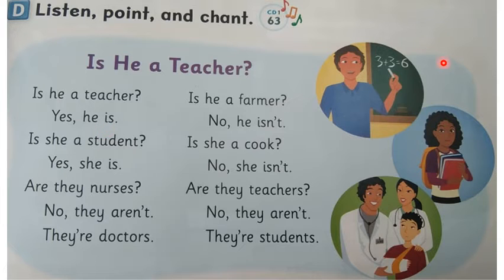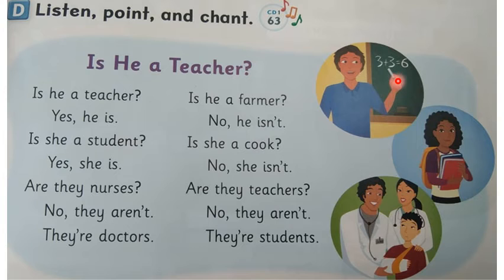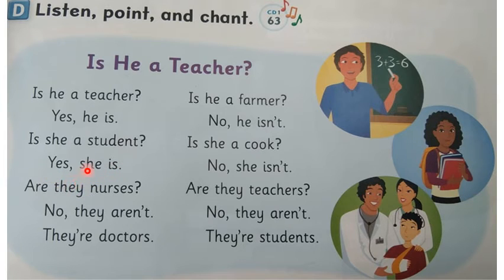Who's that? Is that the first person, the second person, or the third person? Is he a teacher? Yes, he is. That's number one. He's a teacher. Good. Is she a student? Yes, she is. Good. Who is the student? One, two, or three? You're right, it's number two. She is a student.